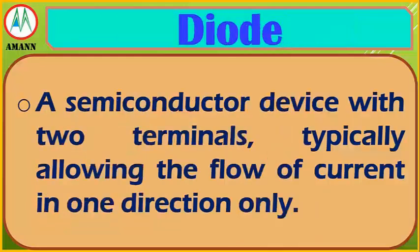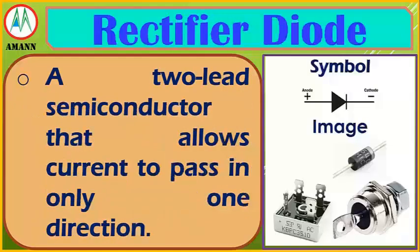Diode: a semiconductor device with two terminals, typically allowing the flow of current in one direction only. Rectifier diode: a two-terminal semiconductor that allows current to pass in only one direction.